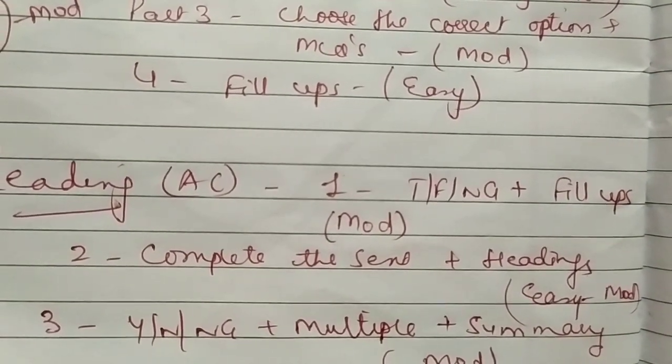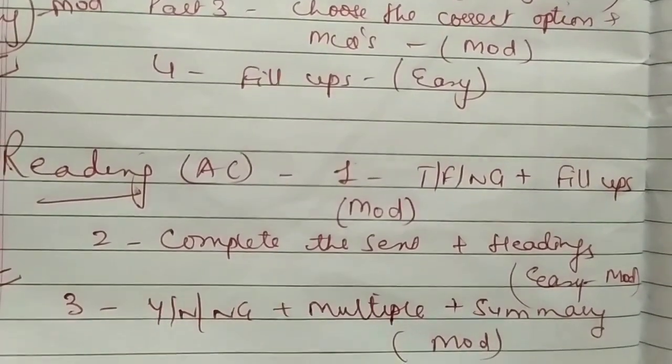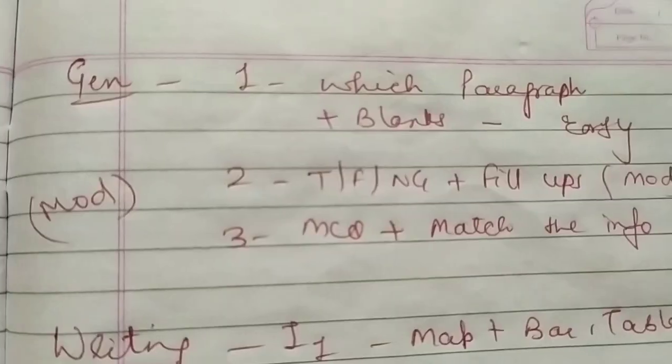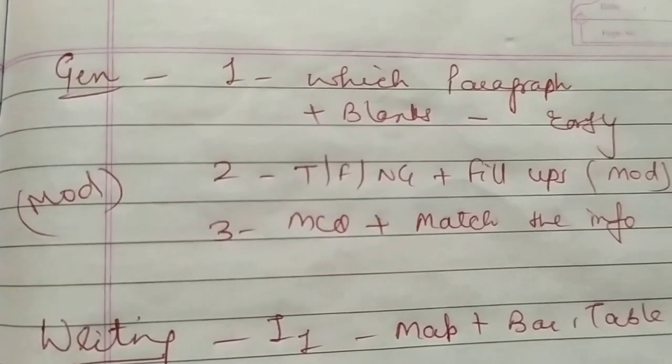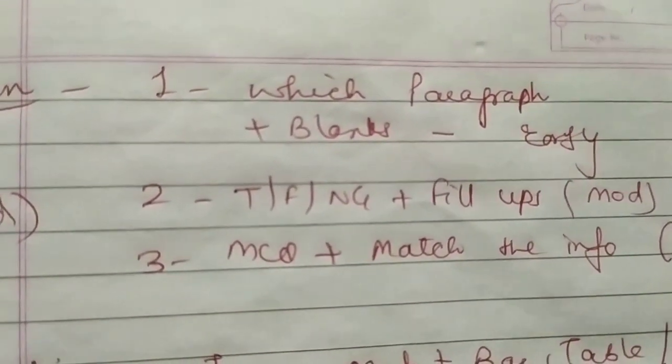Now going to general reading. Passage one will be which paragraph contains the following information and blanks. These are going to be easy.